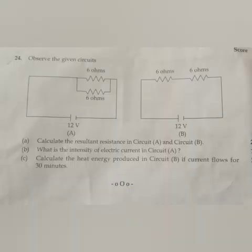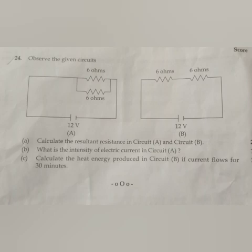(b) What is the intensity of electric current in circuit A? Answer: Current in circuit A, I = voltage/R_parallel = 12/3 = 4 ampere. (c) Calculate the heat energy produced in circuit B if current flows for 30 minutes.